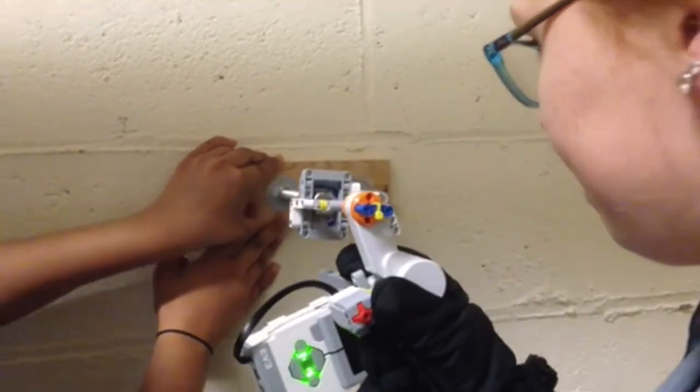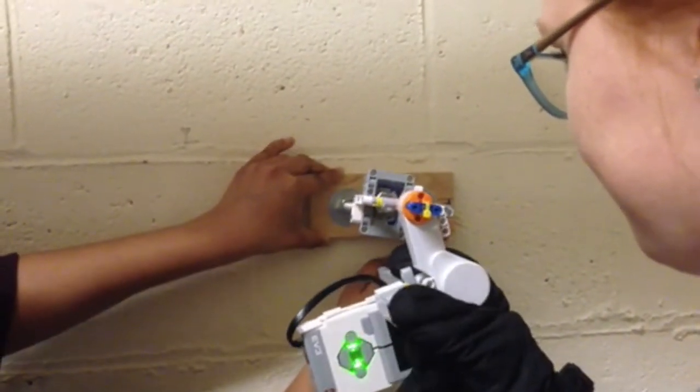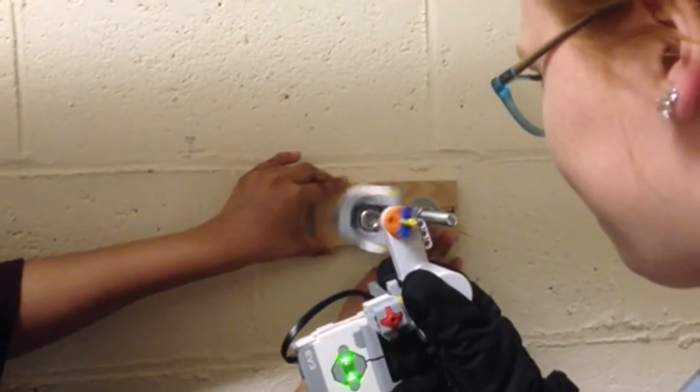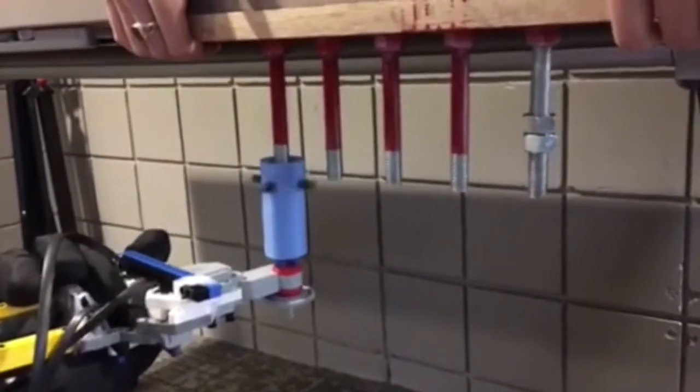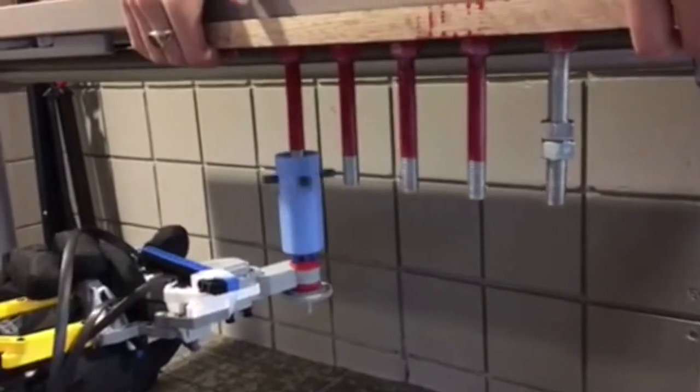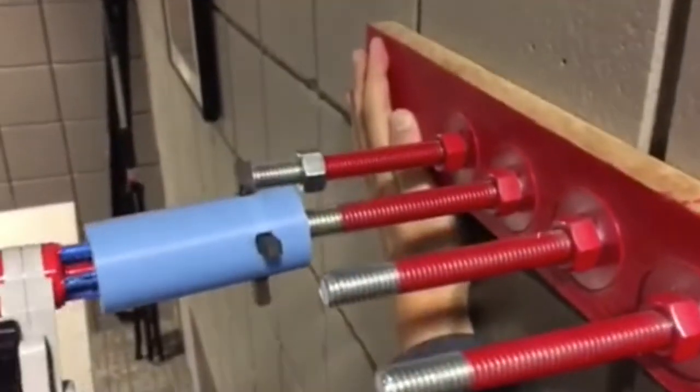While we couldn't simulate the microgravity that astronauts experience in space, we wanted to make sure that students' designs considered this important real-world constraint. So, we had students demonstrate that their tool could work at all angles, including upside down, in the documentation they uploaded to the class website.